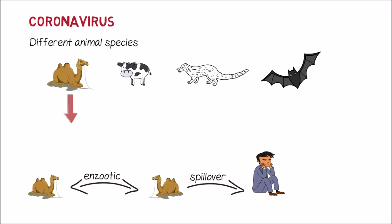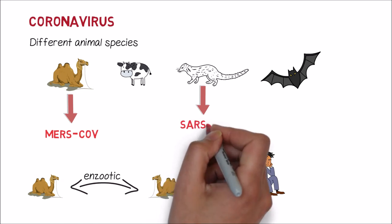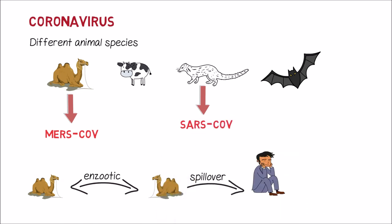For example, the MERS-CoV has been transmitted from camels, and the SARS-CoV has been transmitted from civet cats. Scientists are suspecting that the 2019 novel coronavirus has been transmitted from bats to humans.